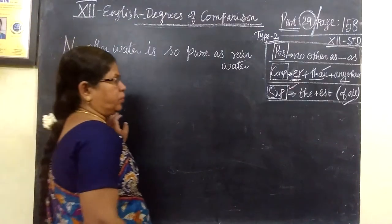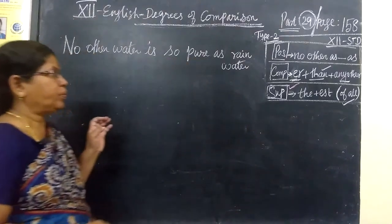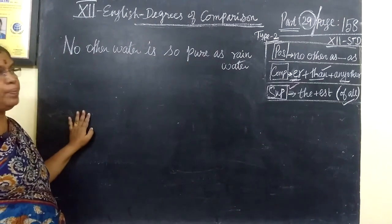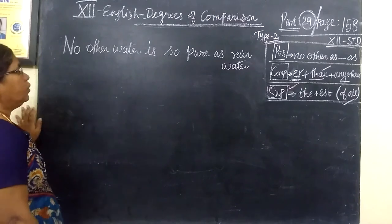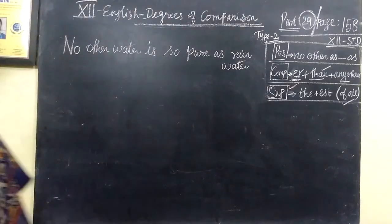So we start the next one in the positive, comparative, superlative. Same type, we give some more examples. This is for 12th standard, page number 158. No other water is so pure as rain water. So here is the degree and it is given in positive, so you are changing into comparative and superlative.